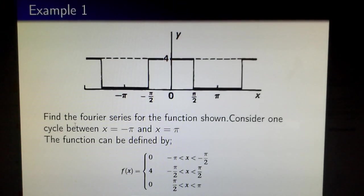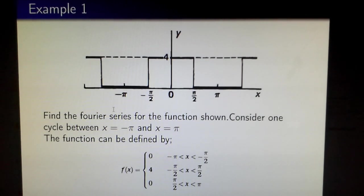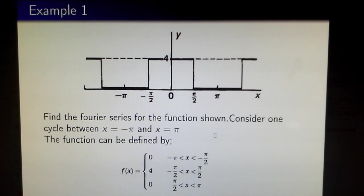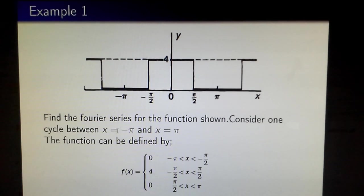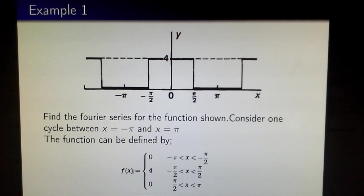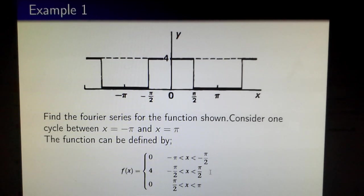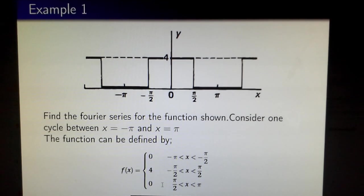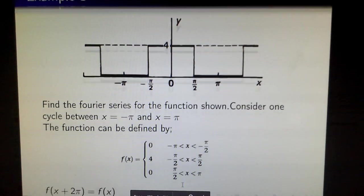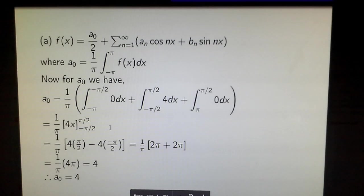Now let's look at Example 1. Find the Fourier series for the function shown in this figure. We consider one cycle between x = -π and x = π. The function is defined piecewise: f(x) = 0 in this interval, 4 in that interval, and 0 in this interval.